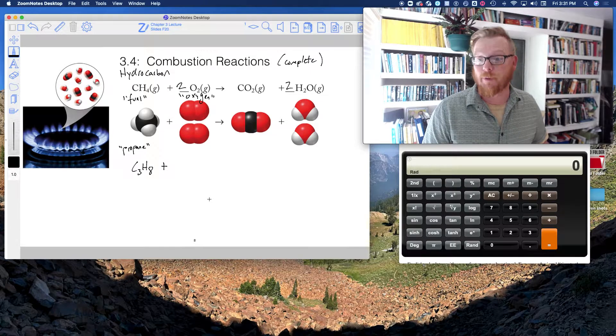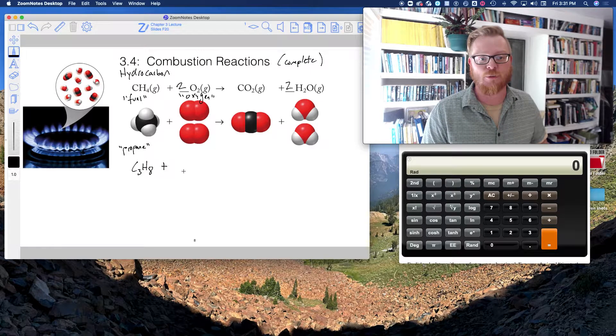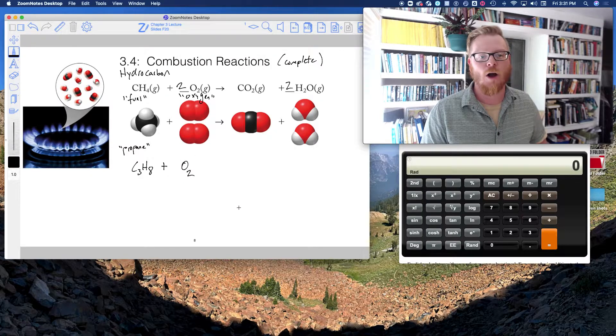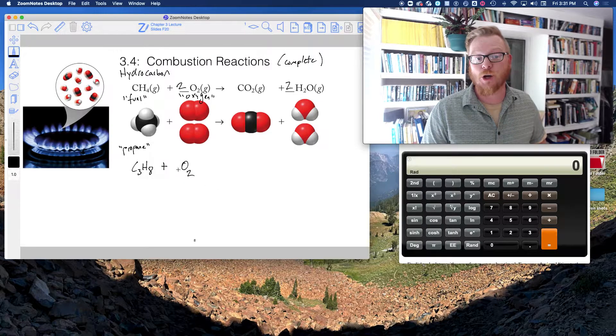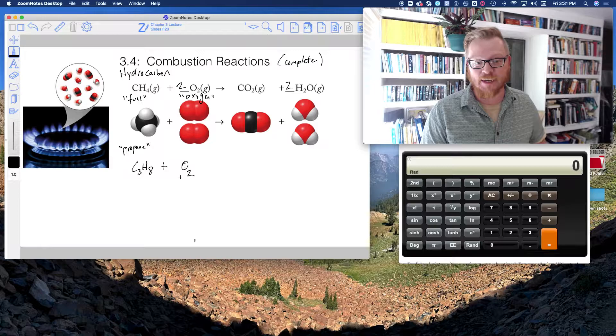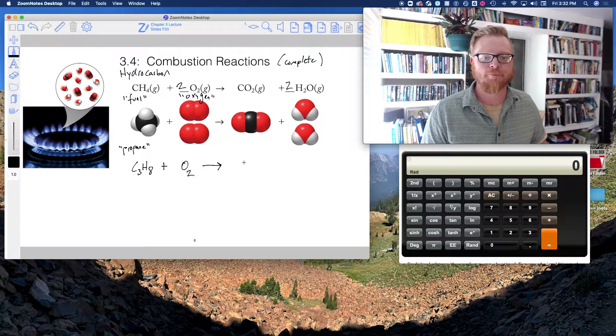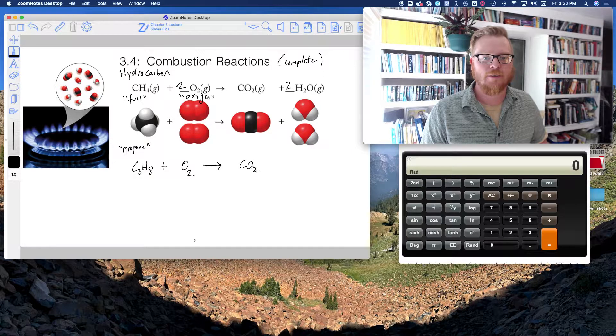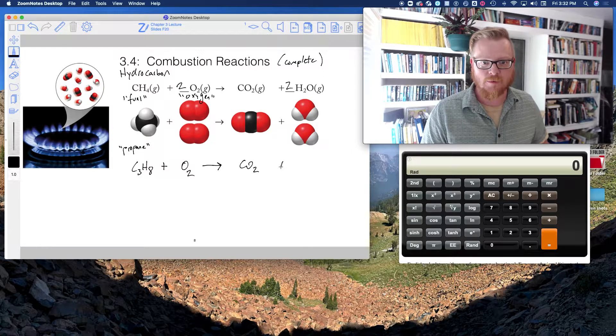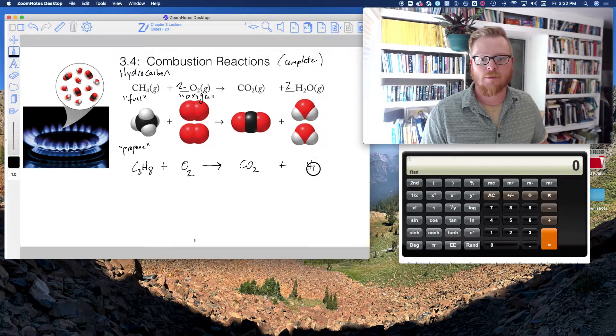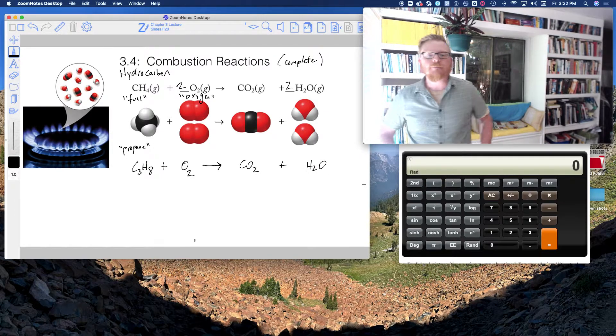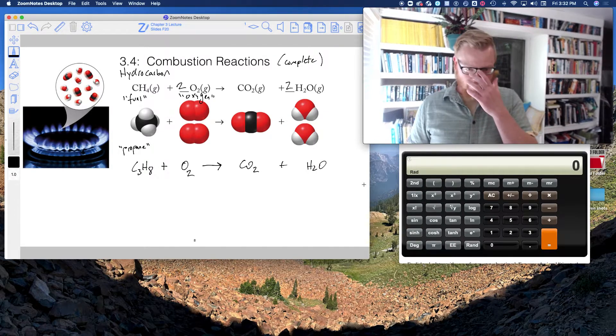And if we want to write the combustion reaction, we start by saying C3H8 plus O2. We don't know how much O2 yet. We've got to balance it, but there's going to be some oxygen. And that's going to react completely to make CO2 always and H2O. Now what we have to do is balance it.